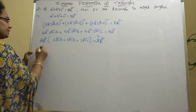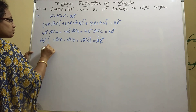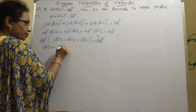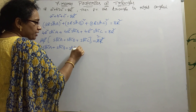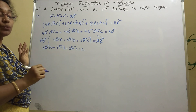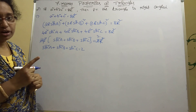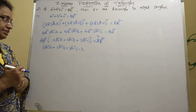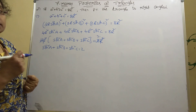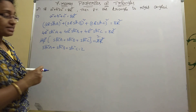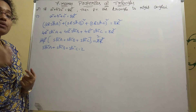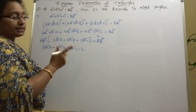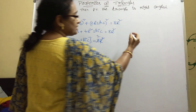Cancel R² on both sides and divide 8 by 4, giving 2. So we get: sin²A + sin²B + sin²C = 2. Now recall trigonometric transformation formulas. Note there is a formula for cos(A+B)·cos(A−B) = cos²A − sin²B, which we will use by converting the sin² terms.